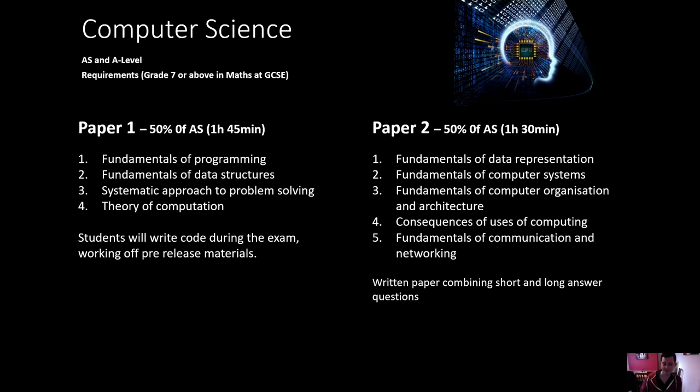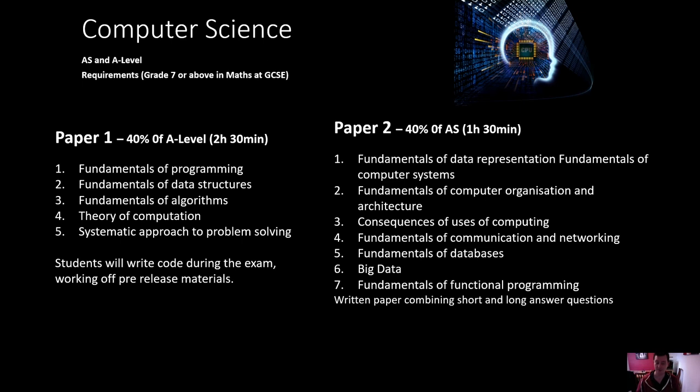Paper one and paper two is a 50-50 split. Paper one focuses on your programming abilities and understanding of problem solving and some of the theories of computation. And paper two then focuses on some of the other fundamental ideas like how computer systems work, how networking works, consequences of using computers. So you get that moral understanding as well. Moving into second year, you'll see the two papers are still the same, but the amount of knowledge goes up a little bit. So the programming gets a little bit harder and we learn more complicated areas of programming. And then in paper two, some of the theory elements get expanded and there's a couple of new ones like big data. And understanding how things like Snapchat and Twitter work and all that data that exists on the Internet and how we can use it, how we can filter it and how it gets used by big businesses.